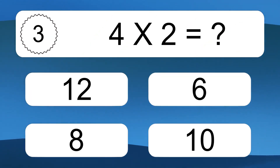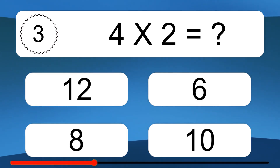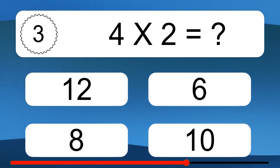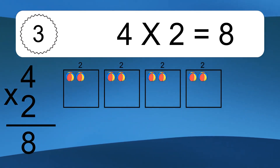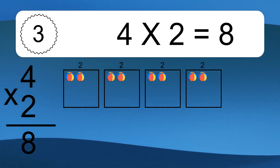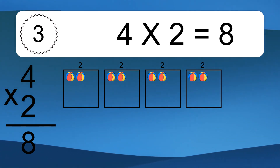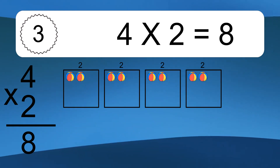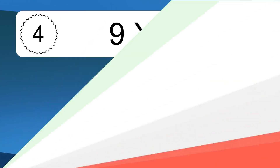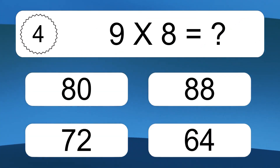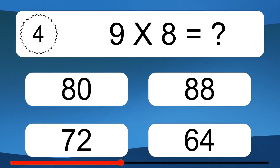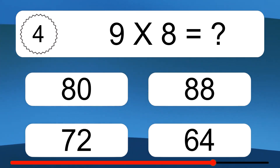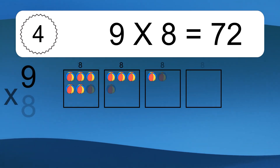4 times 2 equals what? We have 4 boxes and each box has 2 colorful balls inside. If you count all the balls in all the boxes together, you will have 4 times 2 balls. This equals 8 balls.